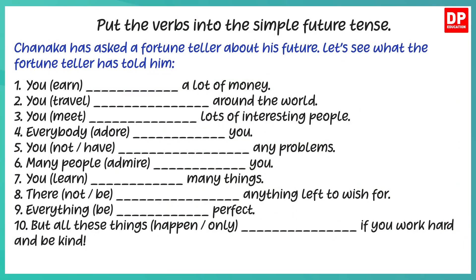Let's look at an exercise and do it together. Put the verbs into the simple future tense. Shanaka has asked a fortune teller about his future. Let's see what the fortune teller has told him: 'You will earn a lot of money. You will travel around the world. You will meet lots of interesting people. Everybody will adore you.'